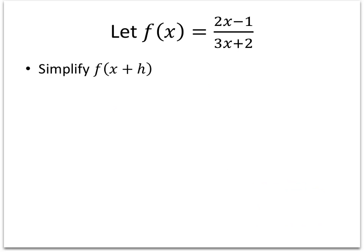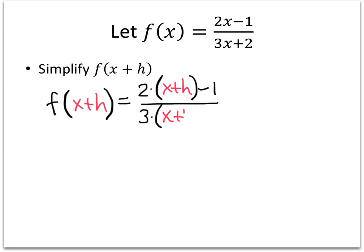One more example just to show you how crazy some of these things can get. Now we've got f(x+h). So we've got 2 variables, but nothing has really changed. The rule is the same. When we've got something crazy in our parentheses, in this case it's x plus h, we just replace all of the x's in our function expression with that x plus h. So in this case we get 2 times the quantity (x+h) minus 1 divided by 3 times the quantity (x+h) plus 2.